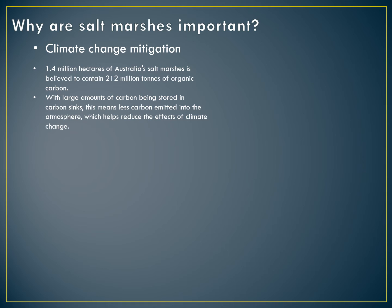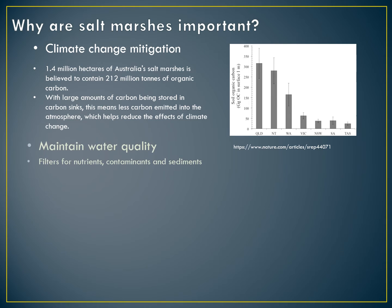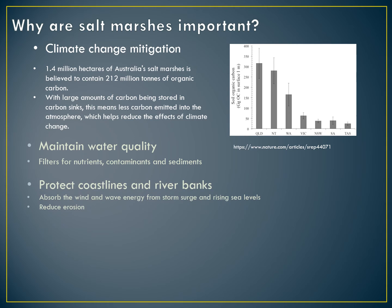As explained previously, salt marshes store carbon, and if these areas are not well maintained it can result in large amounts of carbon being emitted into the atmosphere, contributing to climate change. As seen in the graph, Western Australia has the third highest carbon storage. Salt marshes also help maintain water quality by acting as a filter for nutrients, contaminants and sediments, and they protect our coastlines and riverbanks from erosion by absorbing wind and wave energy from storm surge and rising sea levels.